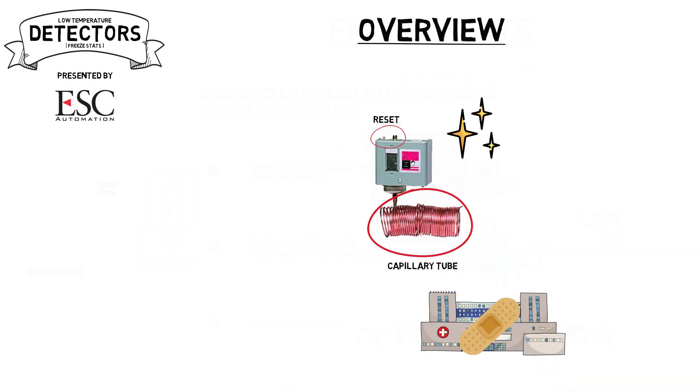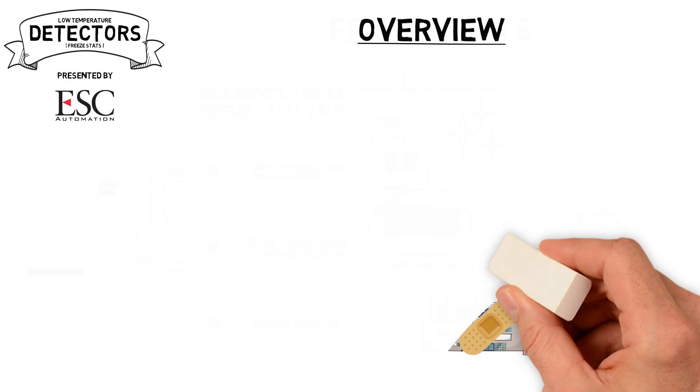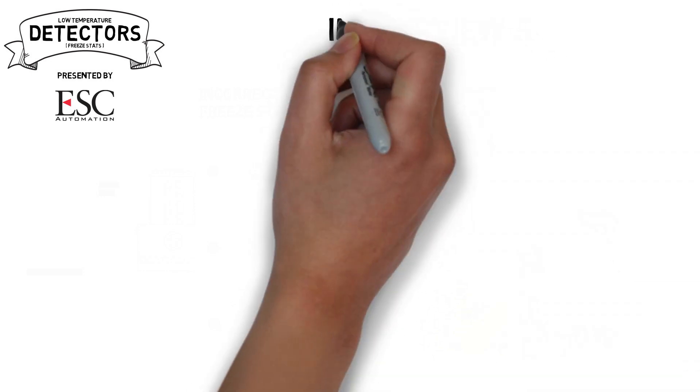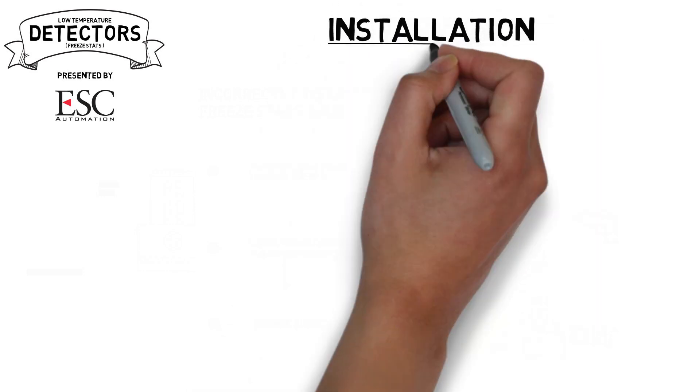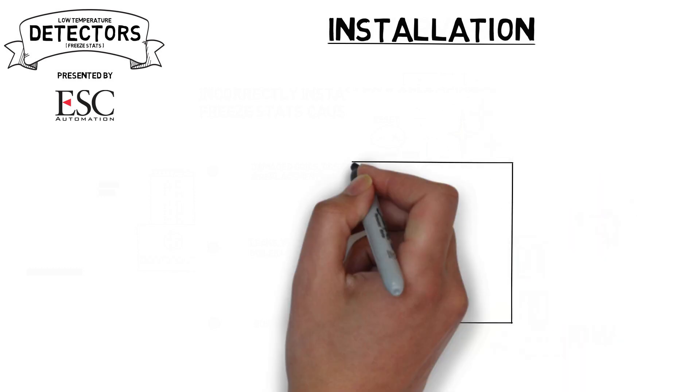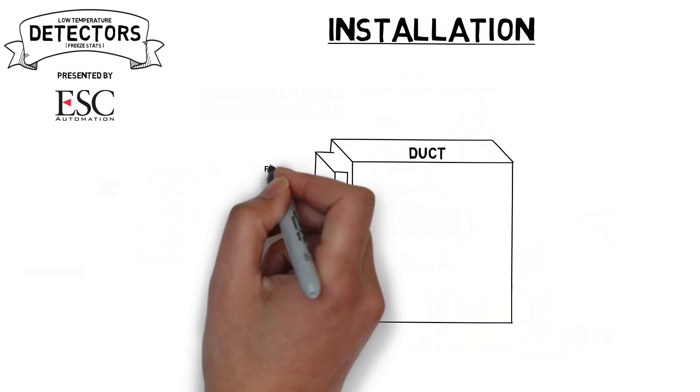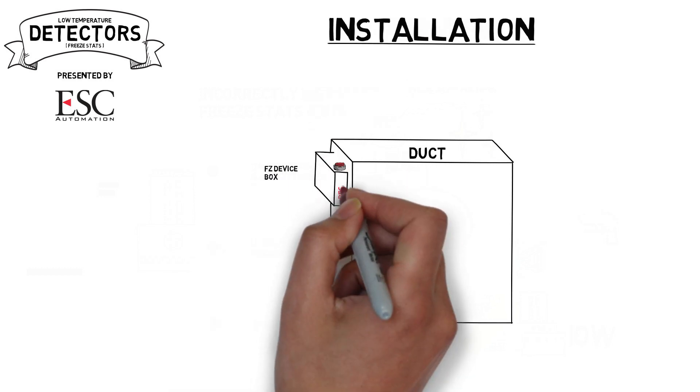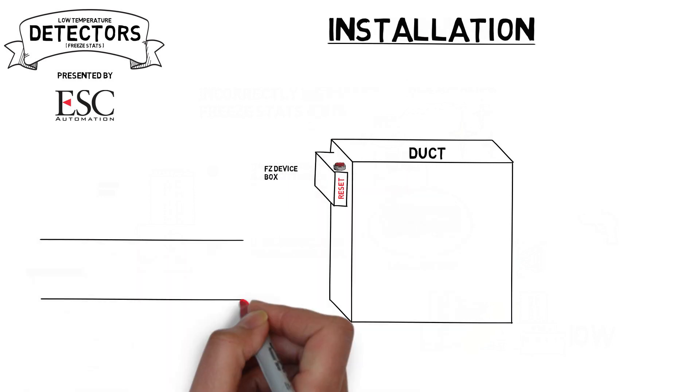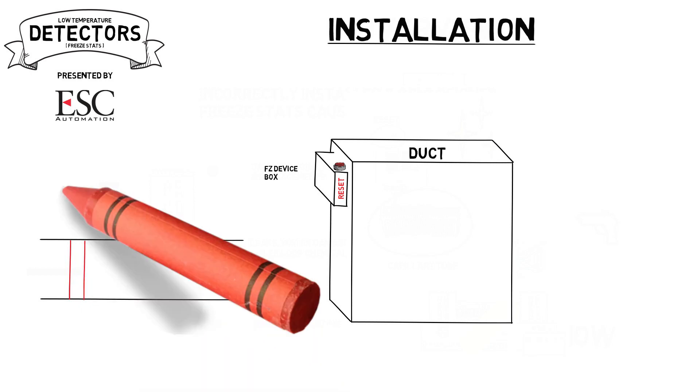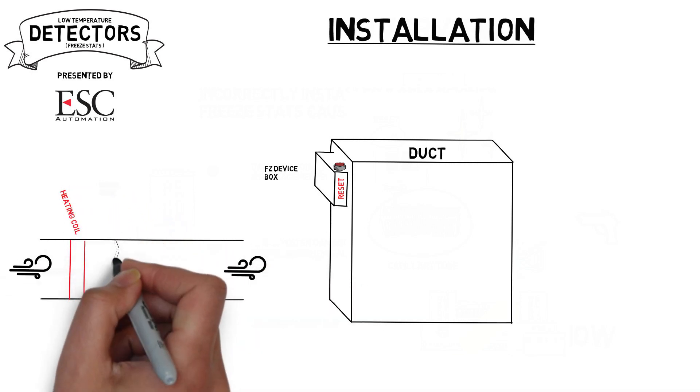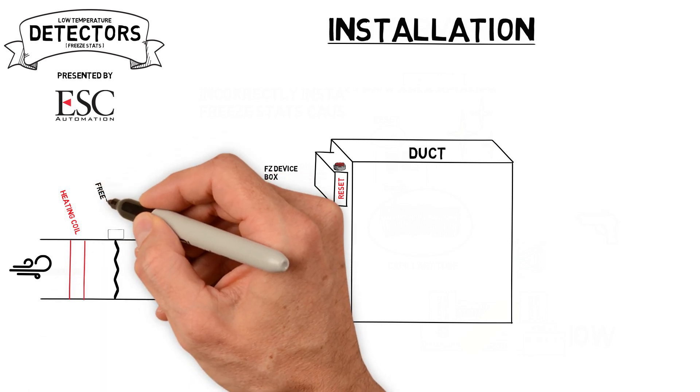For proper installation, the freeze stat device box should be attached to the duct in an easily accessible location with the reset switch clearly labeled. The temperature sensing element or capillary tube can be quite long and it must be mounted just downstream of the heating coil but before the cooling coil. It must be far enough before the cooling coil to prevent normal cooling operations from tripping the stat.